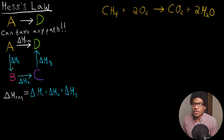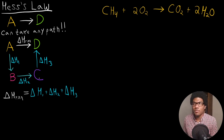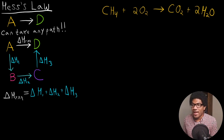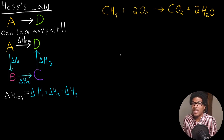For example, if we're after the enthalpy of this reaction — delta H with a subscript Rxn for delta H of reaction — I can take any path to get there. I could go from reactant A to some species B, to some species C, and then to D. As long as I know the enthalpy associated with each one of those individual transformations, I can add all of those up in order to solve for the delta H of the reaction. The fact that enthalpy is a state function allows us to take any convenient path to solve for the enthalpy change of any reaction.